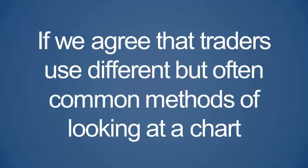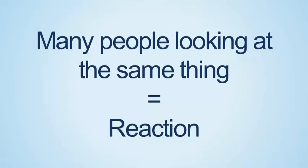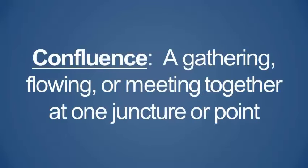If we agree that traders use different but often common methods of looking at a chart, then is it possible to use that information for a higher probability trade? The answer is a resounding yes. If many people are looking at X and something happens at X, expect a reaction. If X and Y meet, you get twice as many people looking at the same thing. In trading, we call it a confluence — when two or more variables are present, a confluence exists.